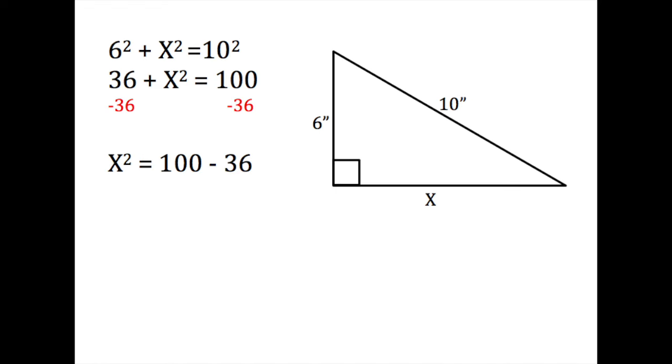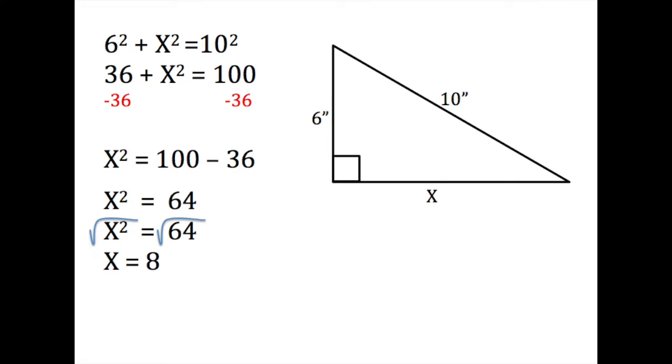We then isolate the x² on the left side by subtracting 36 from both sides. This gives us x² = 64.